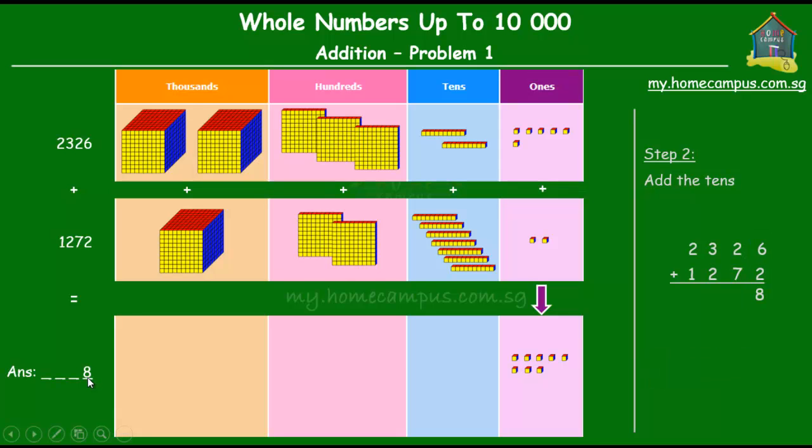Next, the second step is to add the tens. So two tens plus seven tens. The two tens from the first number and the seven tens from the second number, that is equal to nine tens. So we get the nine and we put that there in the answer in the tens place.